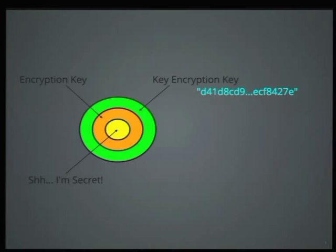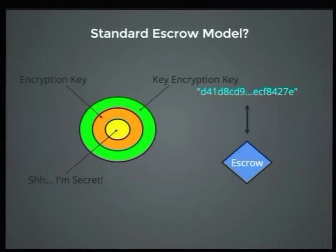One way we can try to automate this is to generate something cryptographically stronger. We generate a cryptographically strong random key, and then store it in some remote system which we can fetch at a later time. This is pretty much the standard escrow model — or is it?